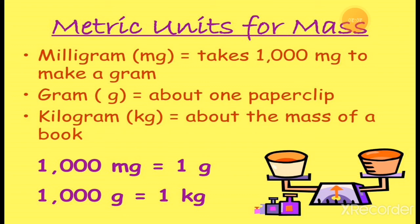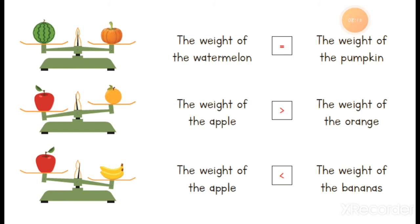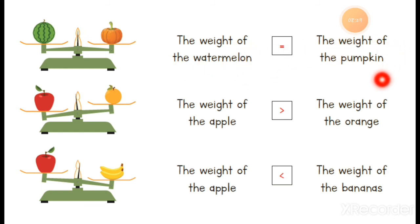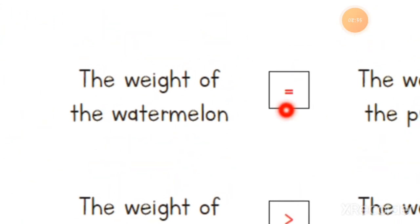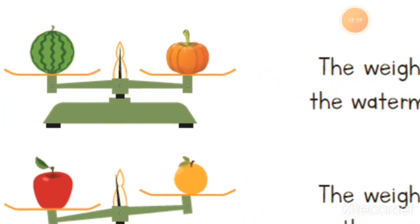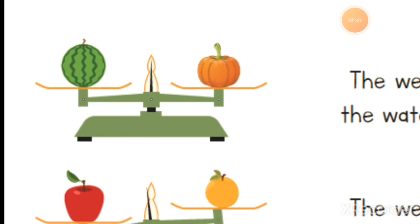I will show you with the help of some pictures. Here is one side with a watermelon and one side with a pumpkin — the scale is straight, which means the weight of the watermelon and the weight of the pumpkin are the same. The black pointer in the middle is straight, meaning both sides are equal weight, not anyone heavy or light.